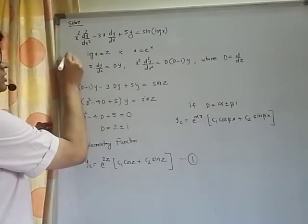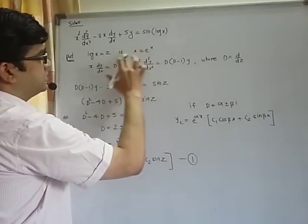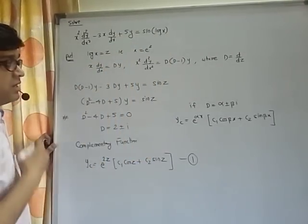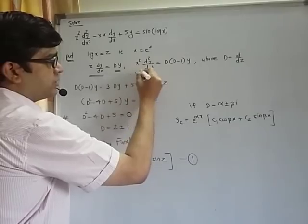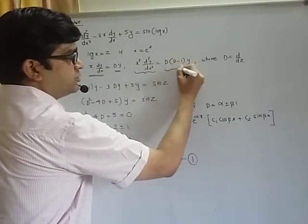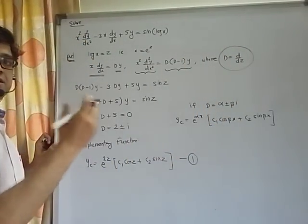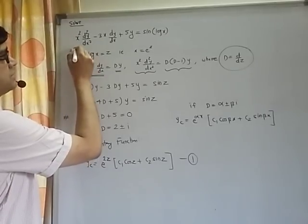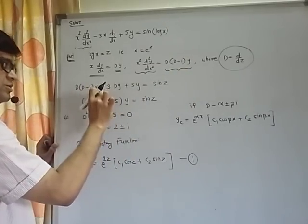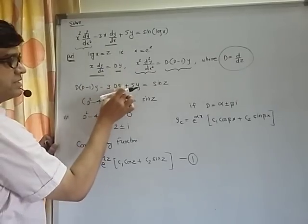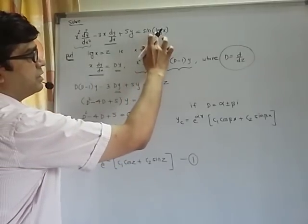What we do, we substitute log x equal to z and that means x equals e raised to z. Then we replace x into dy by dx as Dy, x square into d2y by dx2 as d into d minus 1 on y where capital D is d by dz. This particular term is replaced by d into d minus 1y. This particular term will be replaced by Dy. 3 into Dy plus 5y as it is sin log x. Remember, log x was z.